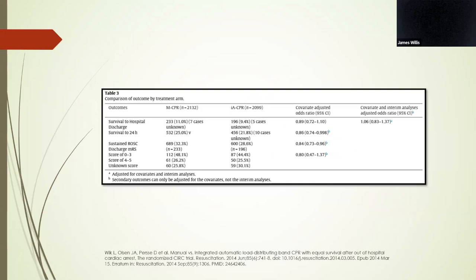And this trial, the CIRC trial, they looked also at the load-distributing band in CPR. So it's 4,300 patients, multi-center, adult patients with out-of-hospital arrest presumed to be a cardiac origin. And they randomized the patients after EMS had started manual CPR. The primary outcome was survival to hospital discharge, and the secondary outcomes were survival of 24 hours, sustained ROSC, and neurologic status on discharge. They didn't find any statistically significant difference between the two interventions with respect to survival to hospital discharge or the rate of functional neurologic status on discharge.